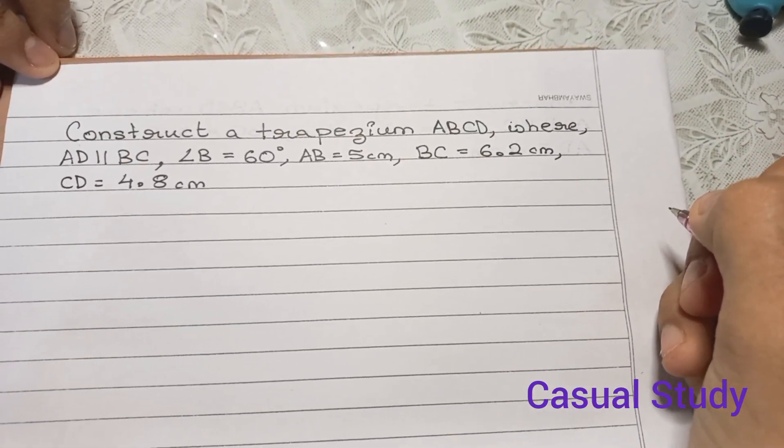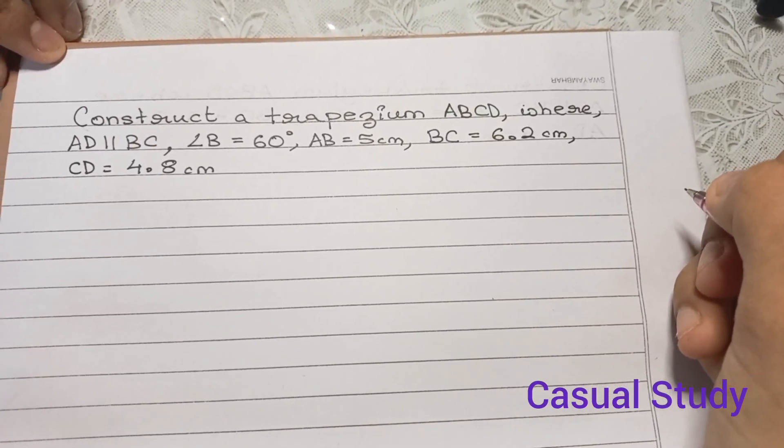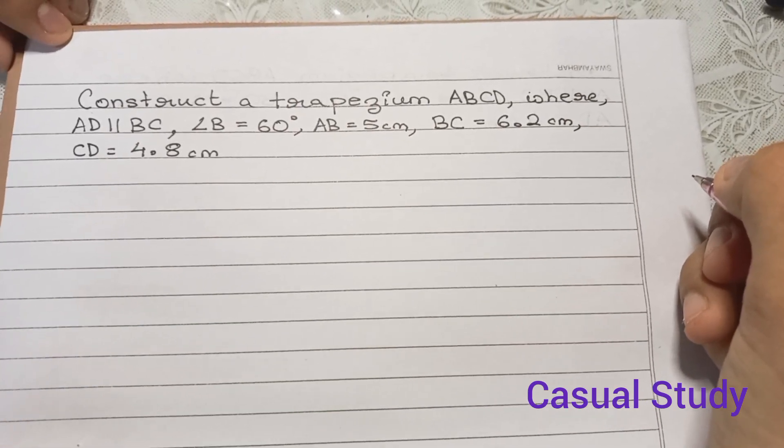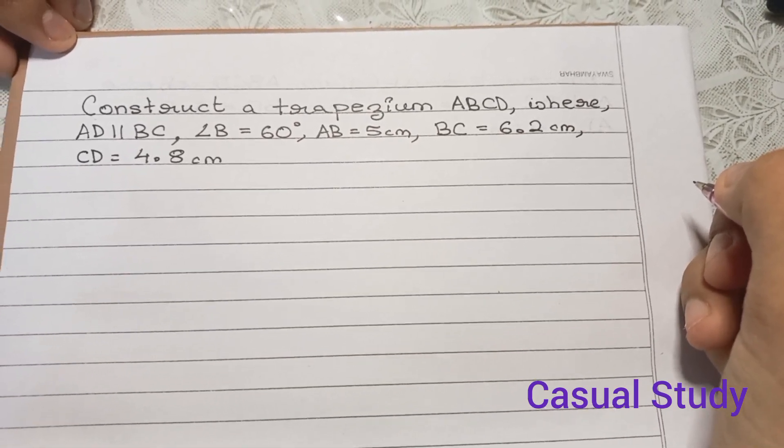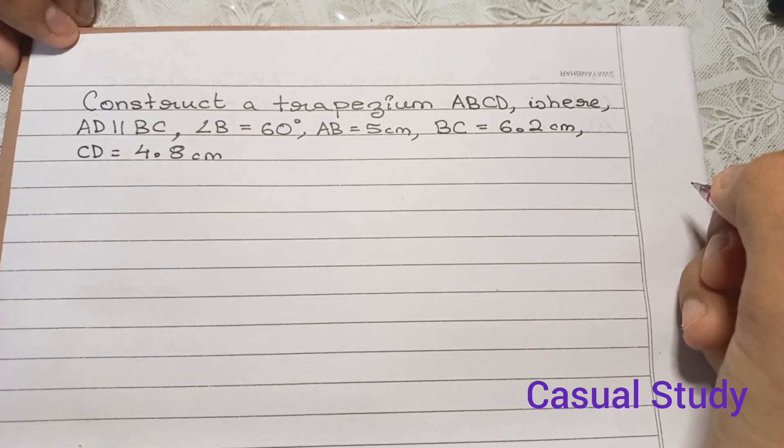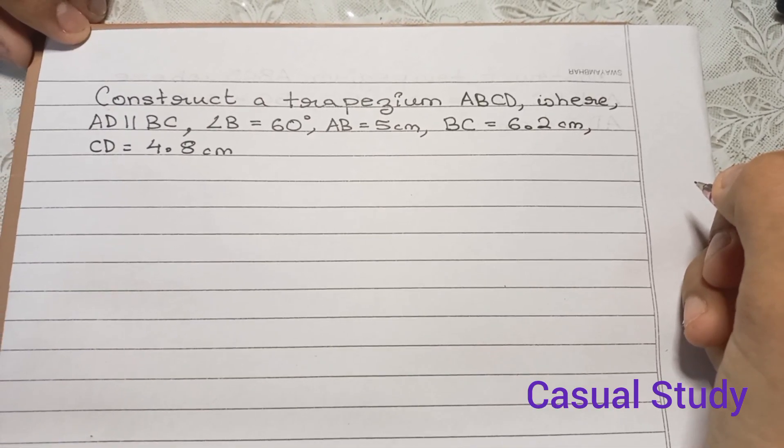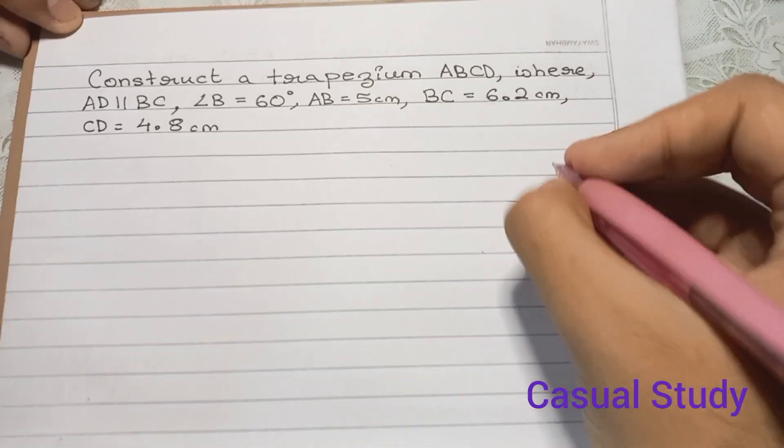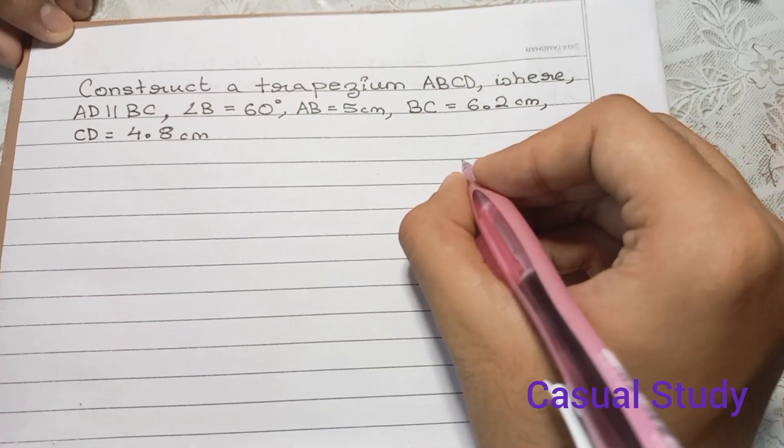Construct a trapezium ABCD where AD is parallel to BC, angle B equals 60 degrees, AB equals 5 cm, BC equals 6.2 cm, and CD equals 4.8 cm. So let us draw the rough diagram first.